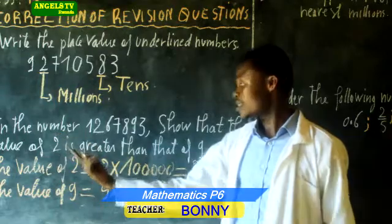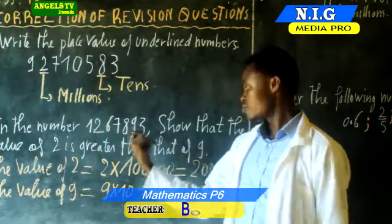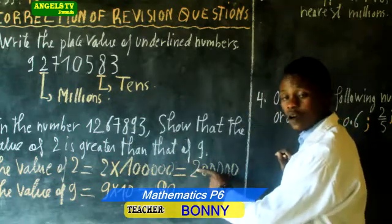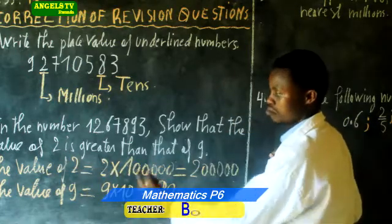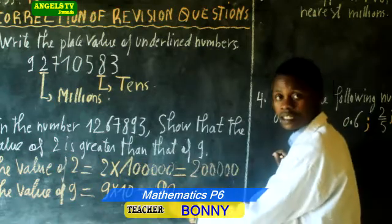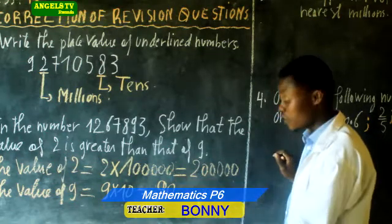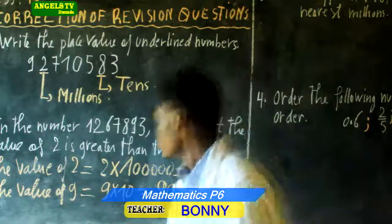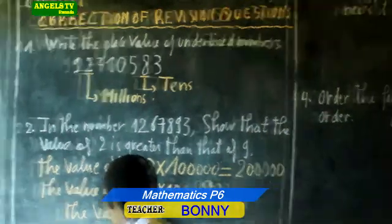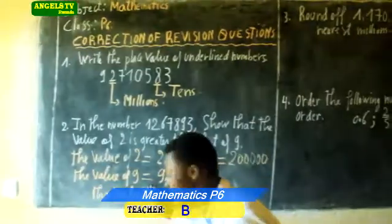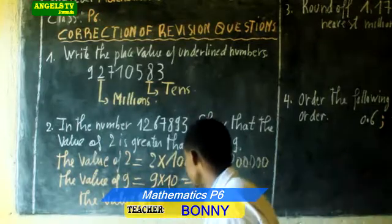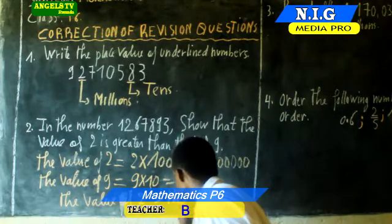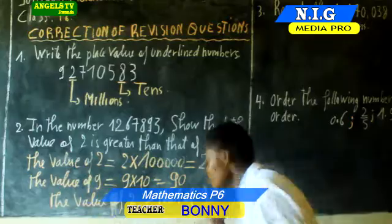They are asking us to compare the value of 2 and 9. So this is the value of 2, and this is the value of 9. We are going to compare these two. Therefore, the value of 2 is greater than the value of 9.